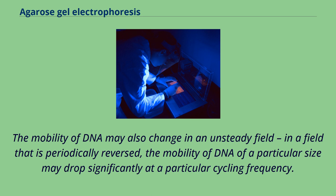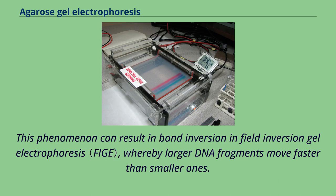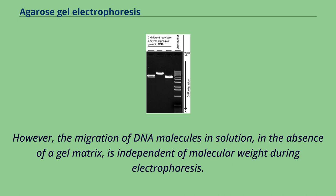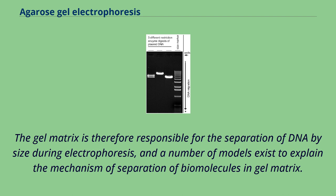This phenomenon can result in band inversion in field inversion gel electrophoresis, whereby larger DNA fragments move faster than smaller ones. The negative charge of the phosphate backbone moves DNA towards the positively charged anode during electrophoresis. However, the migration of DNA molecules in solution in the absence of a gel matrix is independent of molecular weight. The gel matrix is therefore responsible for the separation of DNA by size, and a number of models exist to explain the mechanism of separation of biomolecules in gel matrix.